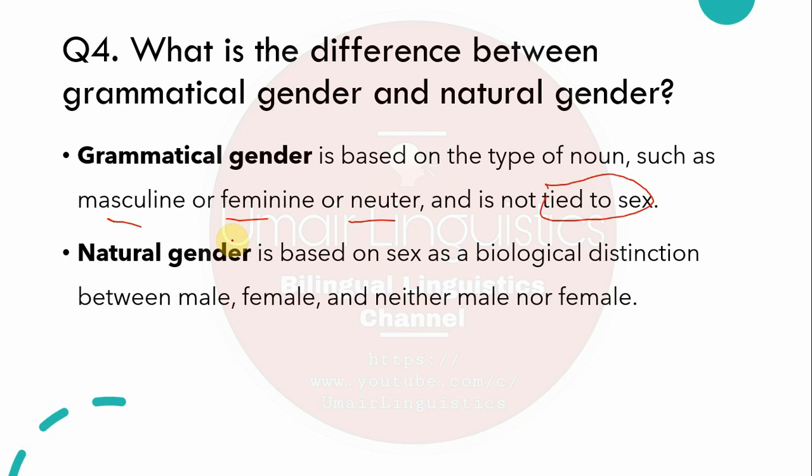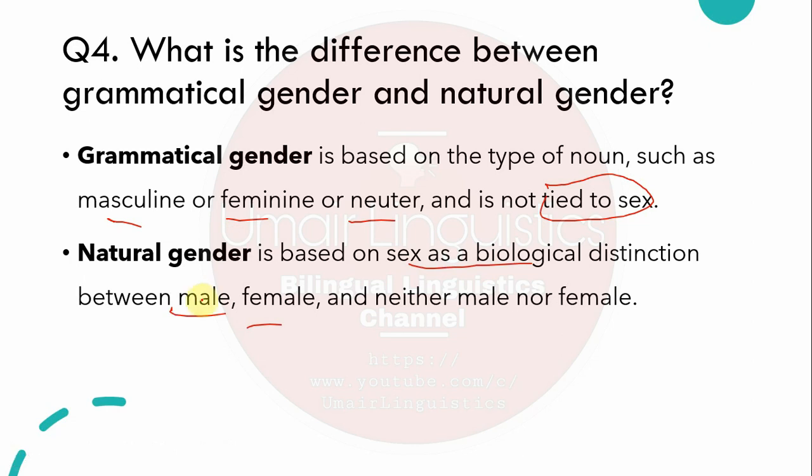Natural gender, on the other hand, is actually biological gender. It is based on sex as a biological distinction between male, female, and neither male nor female. So natural gender is simply a biological distinction based on sex.